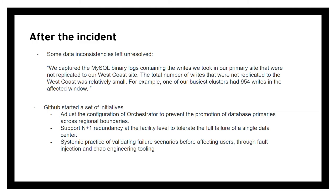GitHub also started a set of initiatives. First, they adjusted the Orchestrator configuration to prevent the promotion of database primaries across regional boundaries, which was essentially what caused the misconfigured database incident. Second, they implemented N+1 redundancy at the facility level to tolerate the failure of a single data center. Third, they began the systemic practice of validating failure scenarios before they affect users, through fault injection and chaos engineering tooling.